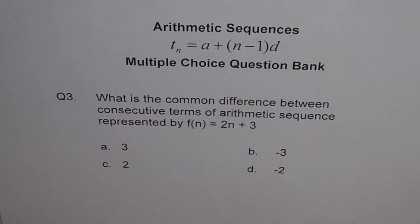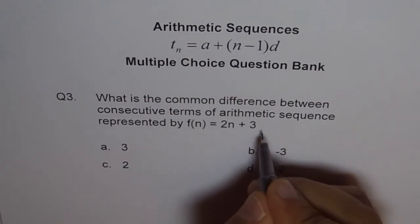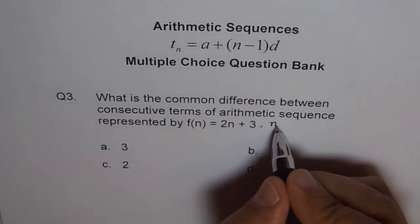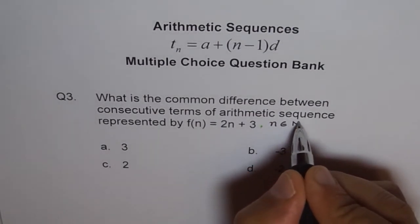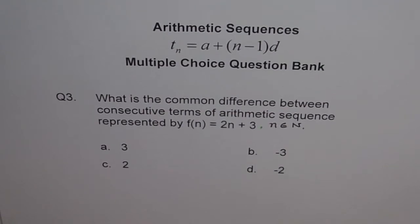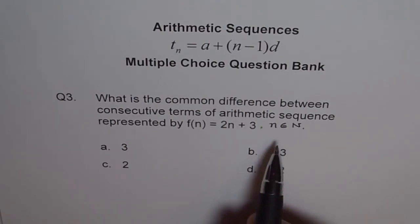Well, I should add something here. I should add that n belongs to natural numbers. That is kind of important. If n is not natural numbers, then it will not represent arithmetic sequence. Normally when we write f of n, we assume that n belongs to natural number, but we should be specific. So I am adding this, n belongs to natural number, in the question.